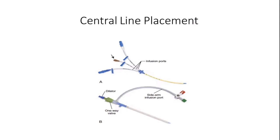There are many reasons we'd put a central line in, but let's say the indication is venous access — what alternatives would we consider first, before a central line, that would be less invasive or potentially easier to perform?